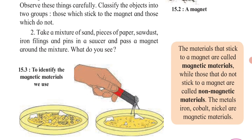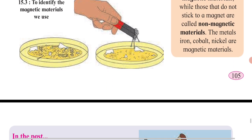Magnetic materials are materials which get attracted to a magnet when brought close to it. Materials which are not attracted to a magnet are called non-magnetic materials. For example, if you bring plastic and a magnet together, they will not attract each other, so plastic is a non-magnetic material. But if you take iron close to a magnet, it gets attracted, so iron is a magnetic material.